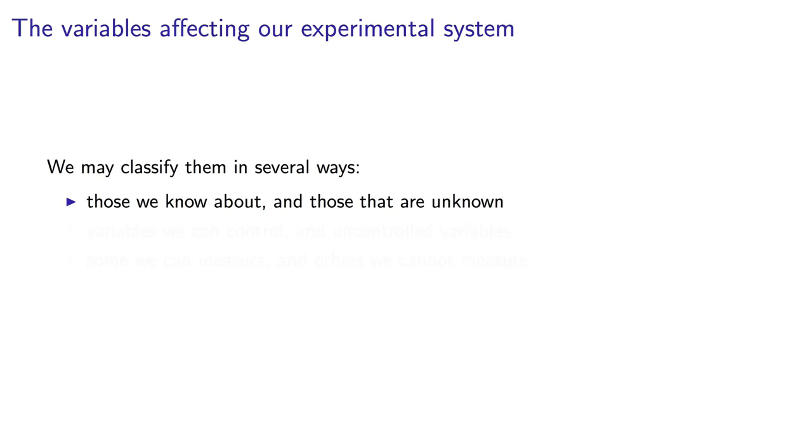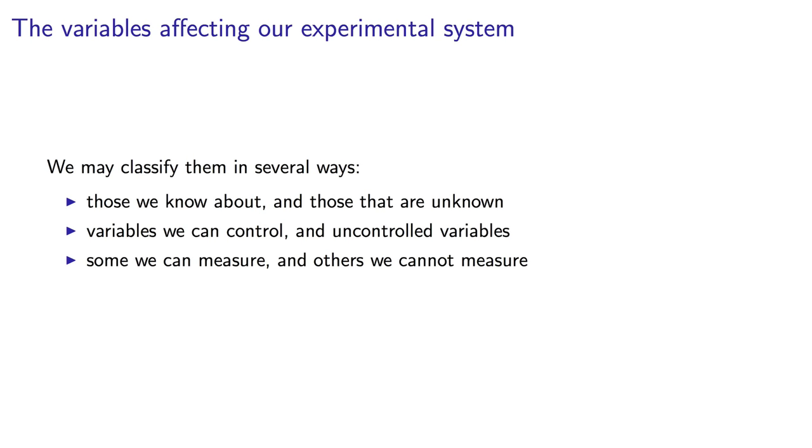To do so, we must understand the nature of variables or factors in our experiments. We can categorize our variables in several ways. The first way is to talk about variables that we know about and those that we don't know about, the unknowns. The second way is we can talk about variables that we can control and those that we cannot control. And thirdly, we can consider variables that we can measure and those that we cannot measure.